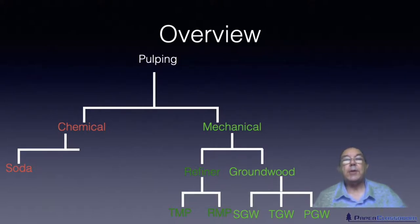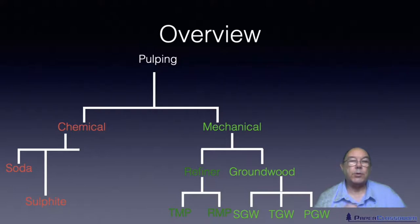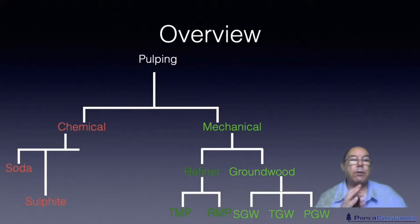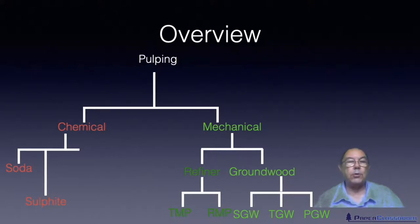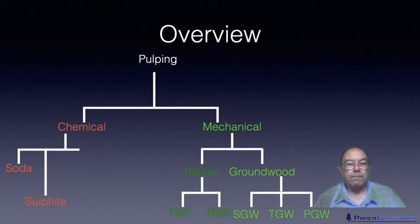The soda process was the first process invented. Today it is not used for wood at all, but it is used for what we call non-wood fibers or annual crops. Following on from the soda process was the sulfite process, invented by a Swedish chemist. Whereas the soda process was pH 14 — sodium hydroxide, very alkaline — the sulfite process used sulfurous acid, so the pH was down at one or two, the other extreme of the pH scale. It is an incredibly aggressive pulping process.